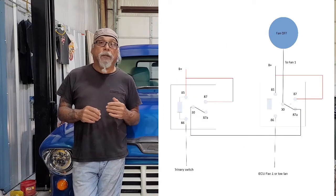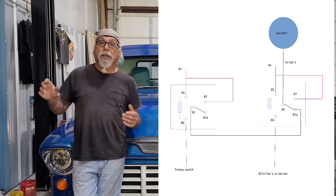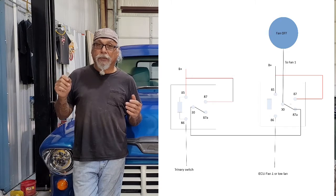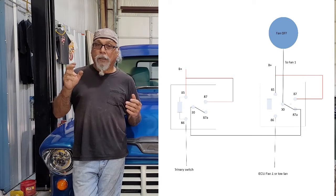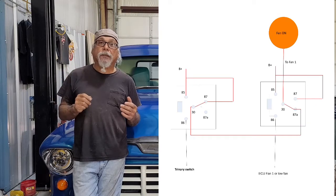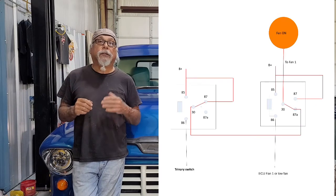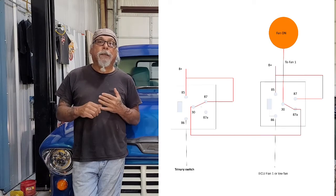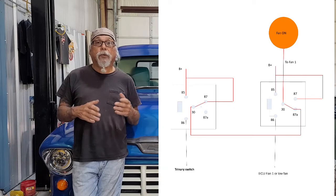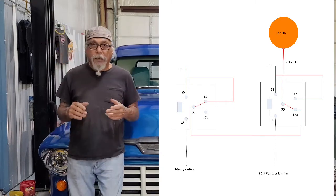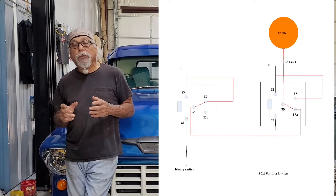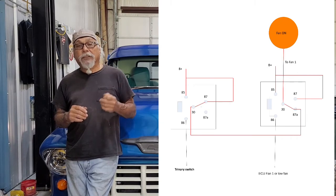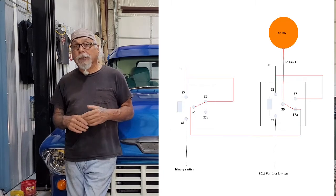87A is normally closed, so this way if the trinary switch is turned on from the air conditioner and turns on the trinary relay, that sends 12 volts B plus through the fan one relay through 87A directly to the fan and turns the fan on. The good thing about that is the ECU checks the fan one relay, gets its 80 ohms that it sees, and it thinks it's good and I don't get any errors.